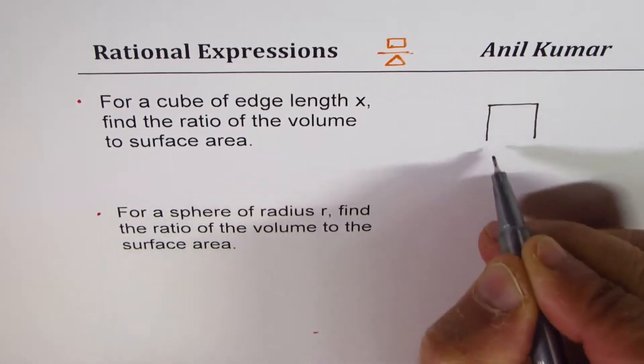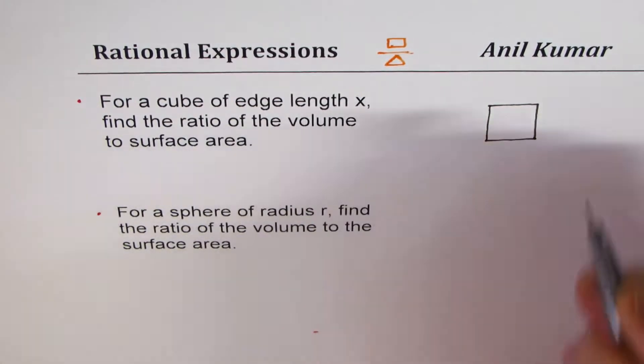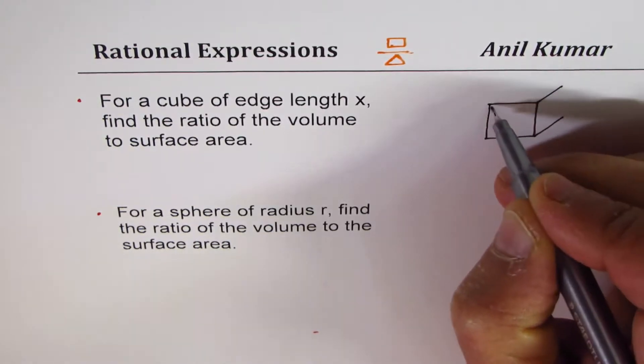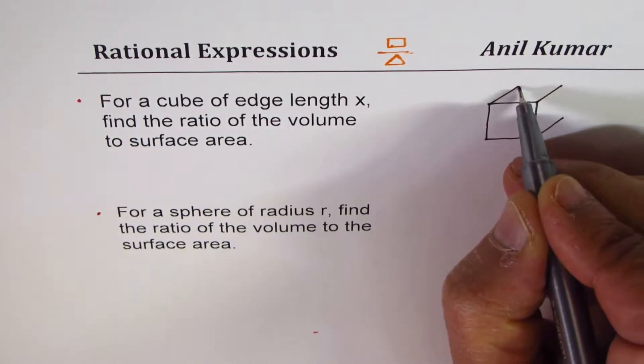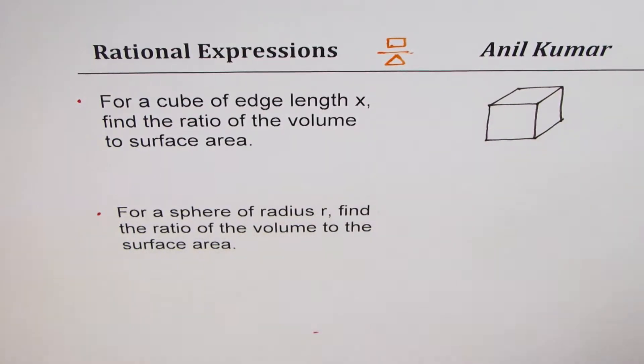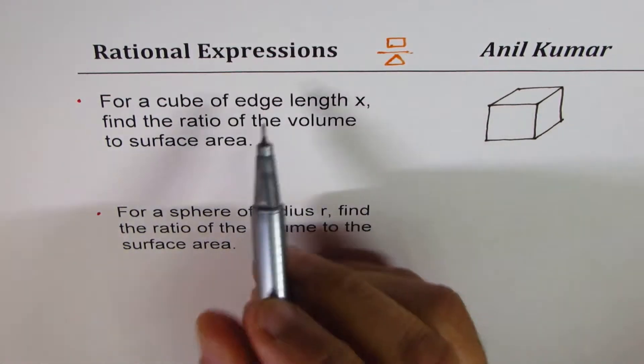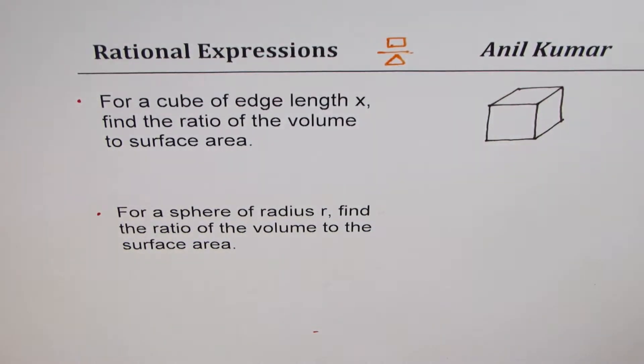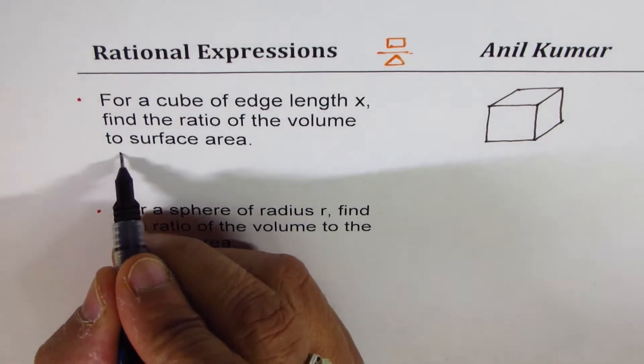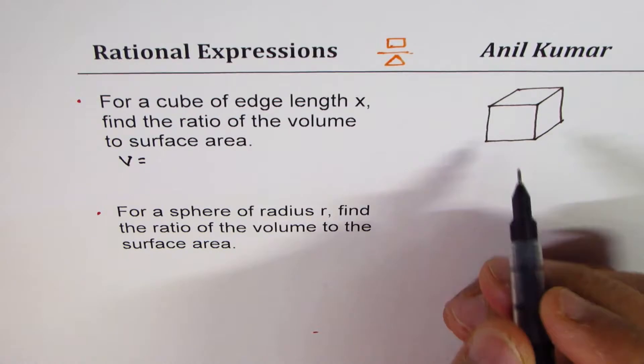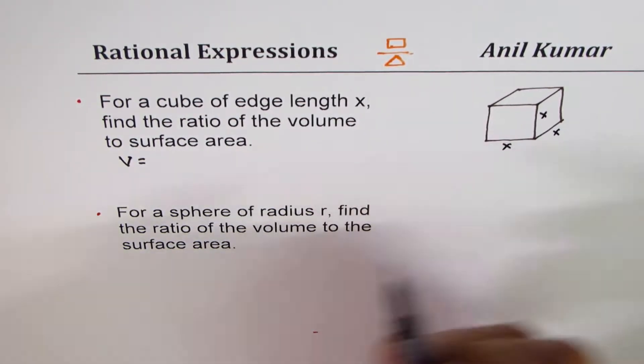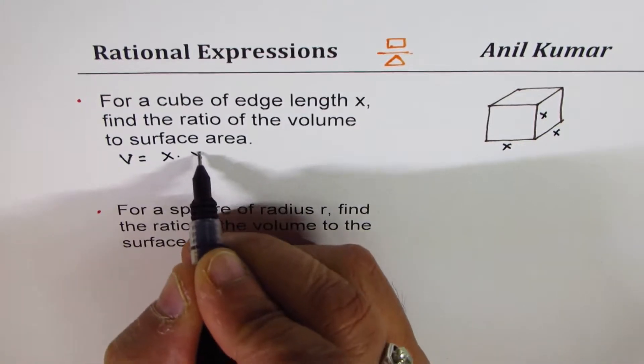Each side is x units long. Now if that is a cube, then what is the volume of a cube? Volume of a cube is each side is x, length width and height, so volume will be x times x times x. You could also write x cubed.